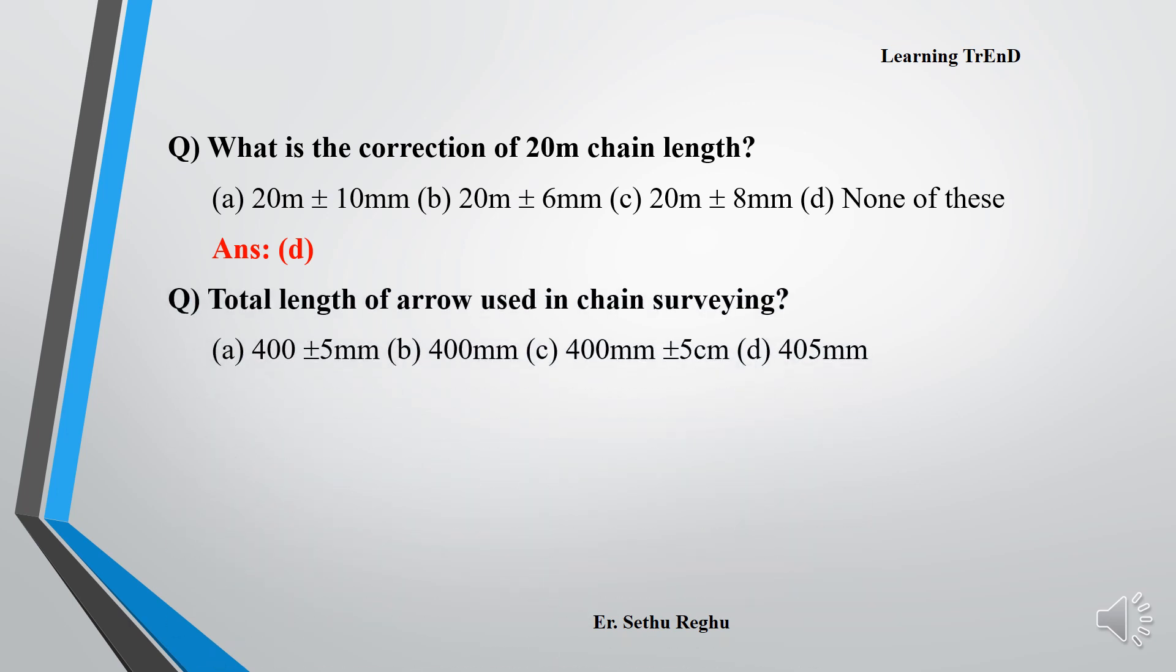Next question: Total length of arrow used in chain surveying. Options are 400 plus or minus 5 mm, 400 mm, 400 mm plus or minus 5 centimeter, and 405 mm. What is the answer? Option A, 400 plus or minus 5 mm.